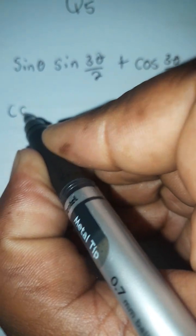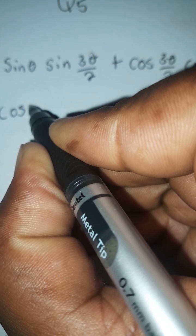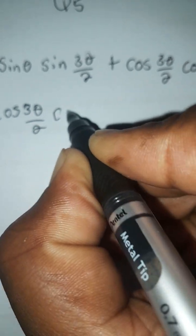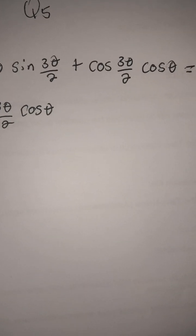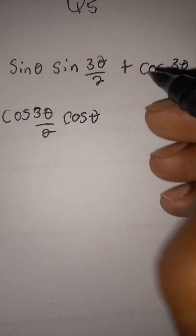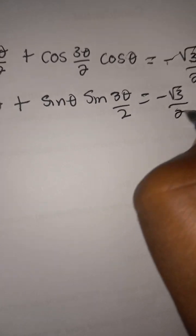So we need to group this in standard form. We'll regroup it as cos 3θ/2 cos theta plus sin theta sin 3θ/2, which equals negative √3 over 2.